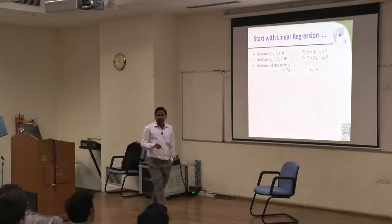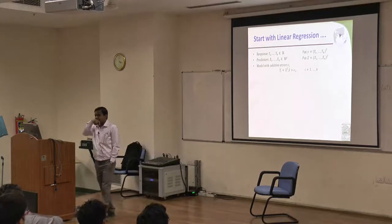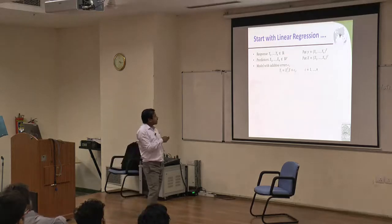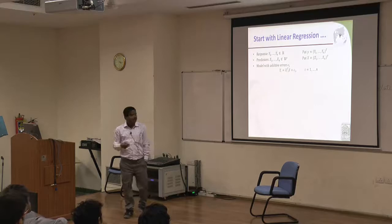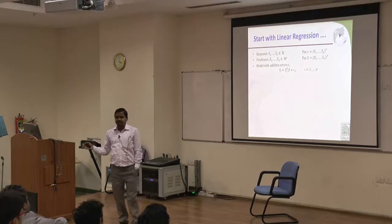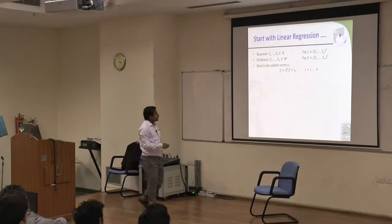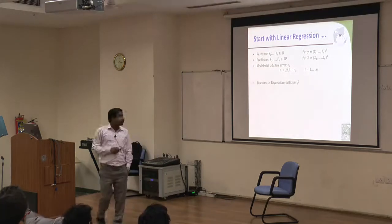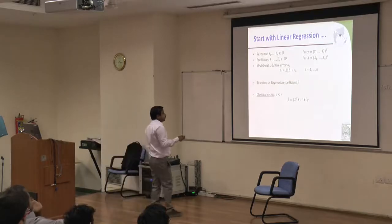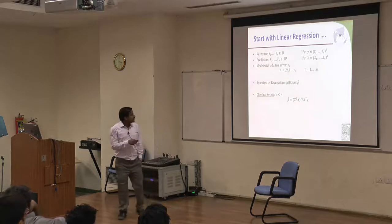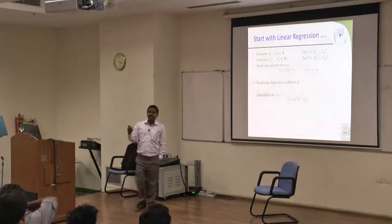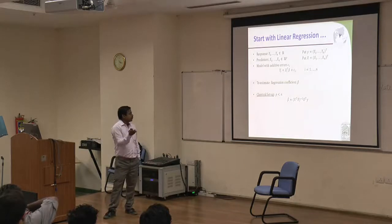Let's start with linear regression. The basic problem is that we have n response values in R, and then we have predictors x1 to xn observations, which are p-dimensional predictors. With the famous linear regression model with additive error, our objective is to estimate beta. The common estimator used in the classical setup — where the number of features is less than the number of observations — is OLS, MLE, method of moments; all those nice properties are attained by this estimator.